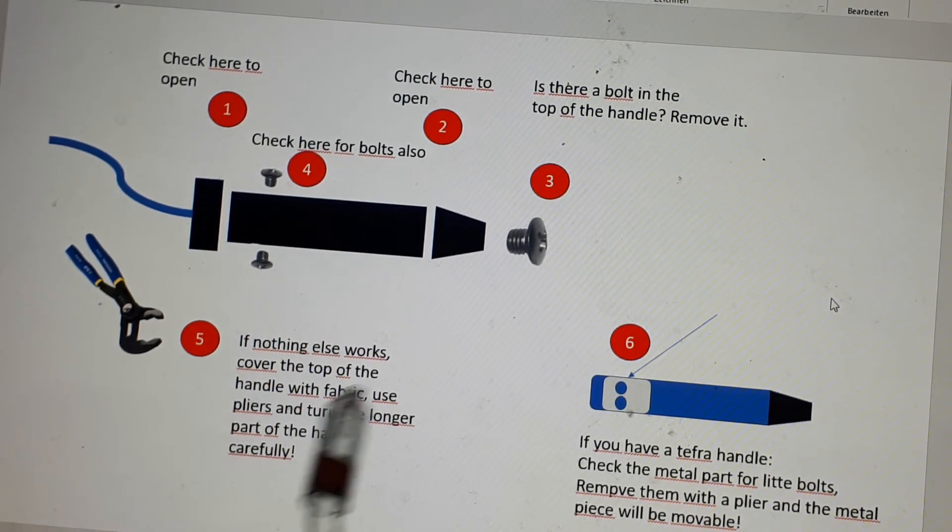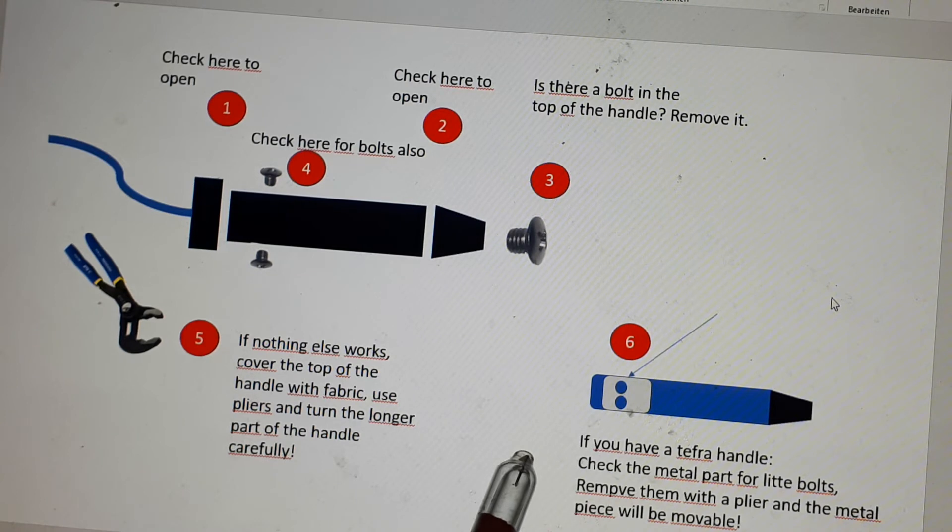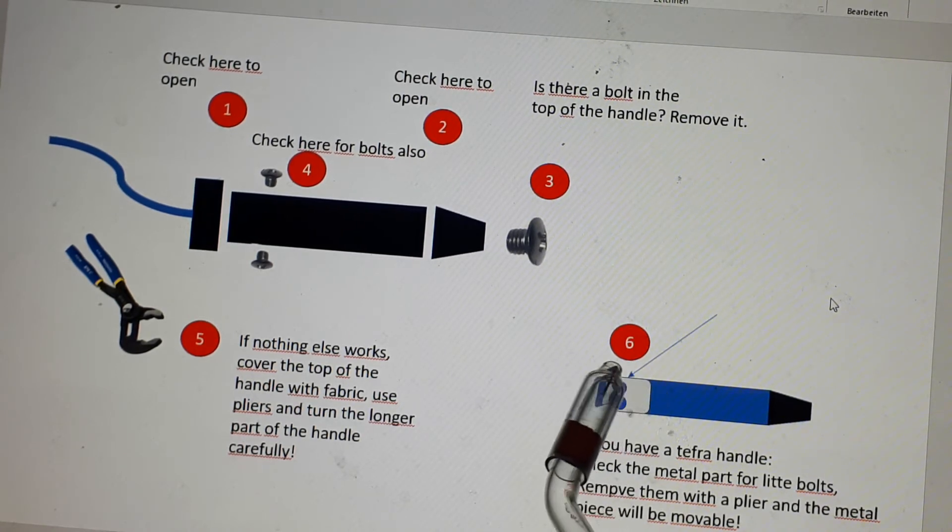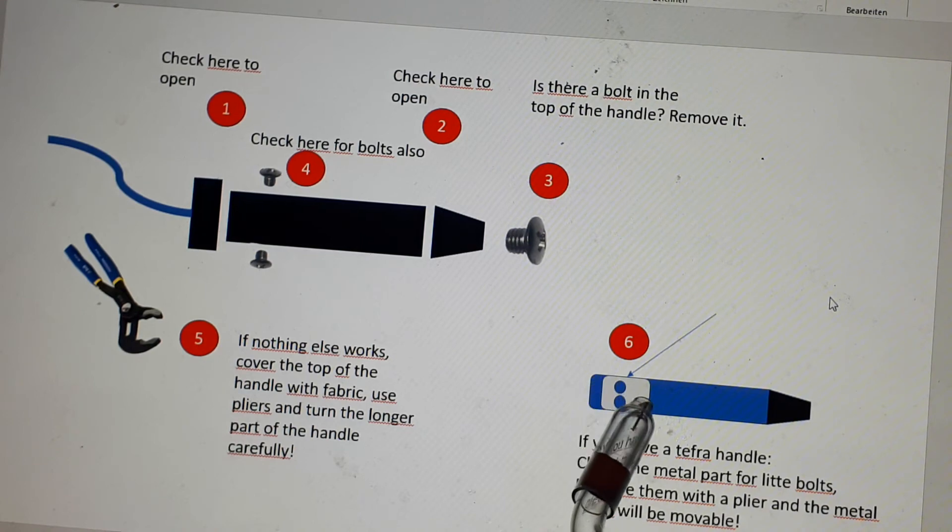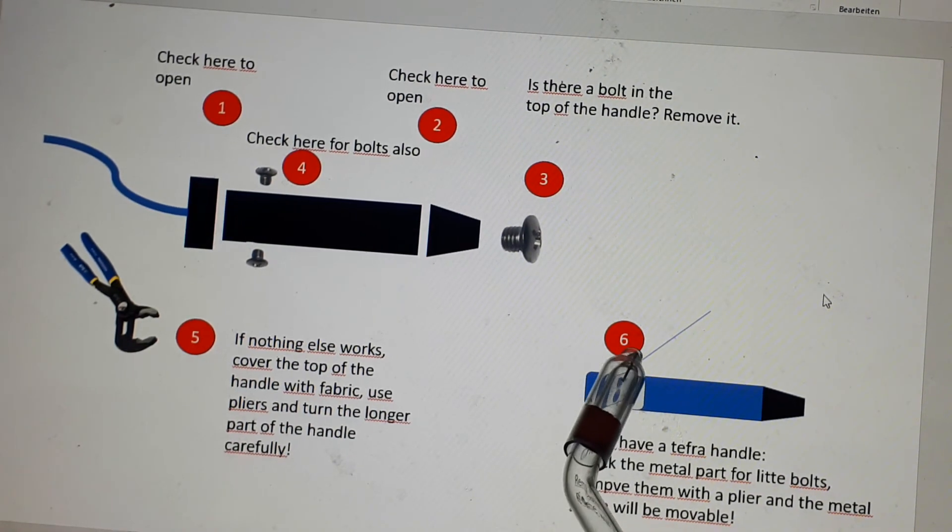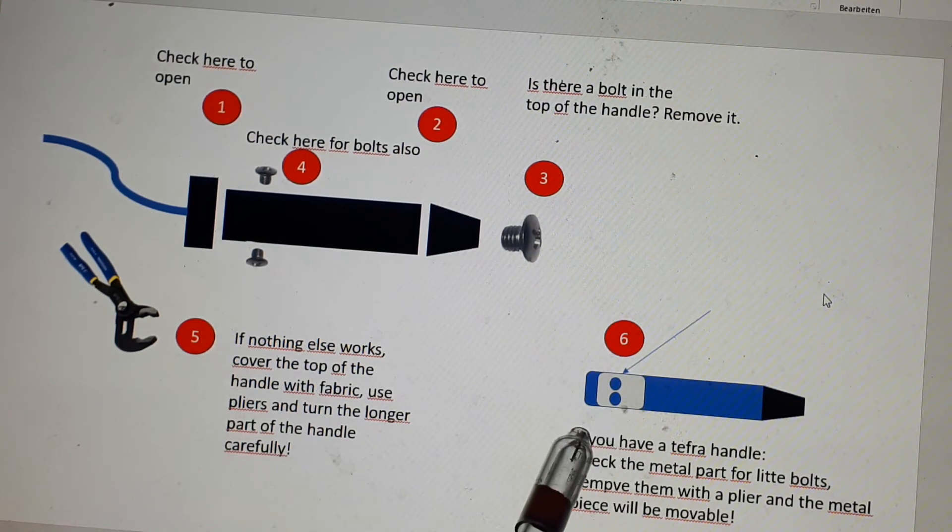Here in Germany we have some devices that are very popular here, the Tefras. And Tefras has a specialty in the handle. There is a metal sheet and it's wound around the handle and it's fixed with little bolts. And these bolts you can easily remove with a plier.